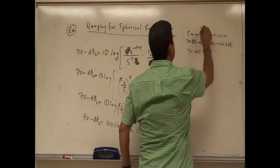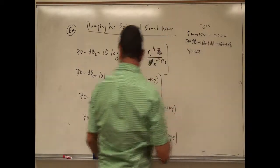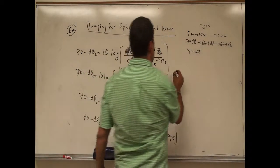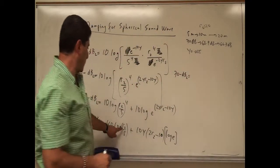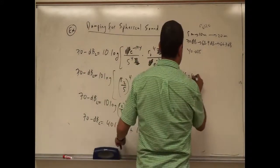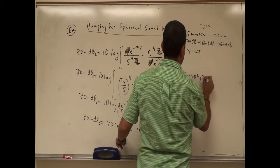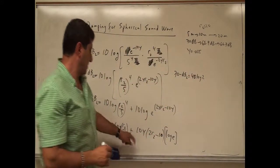Now let's see what's going to happen. If I put R2 is equal to 10 meters, then what's going to happen? We're going to have here 70 minus db2. If you put here 10 meters, you're going to have log of 2, so 40 log of 2.